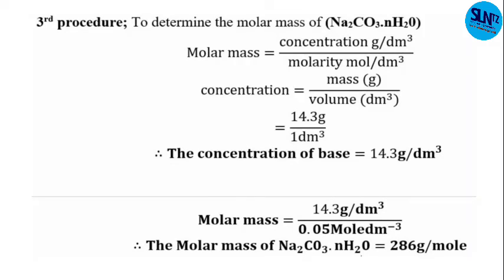Procedure three is to determine the molar mass of hydrated sodium carbonate. Molar mass equals concentration divided by molarity. The mass is 14.3 g dissolved in one dm³, so the concentration is 14.3 g/dm³. Molar mass = concentration ÷ molarity = 14.3 ÷ 0.05 = 286 g/mol. That is procedure three — we now have the molar mass.